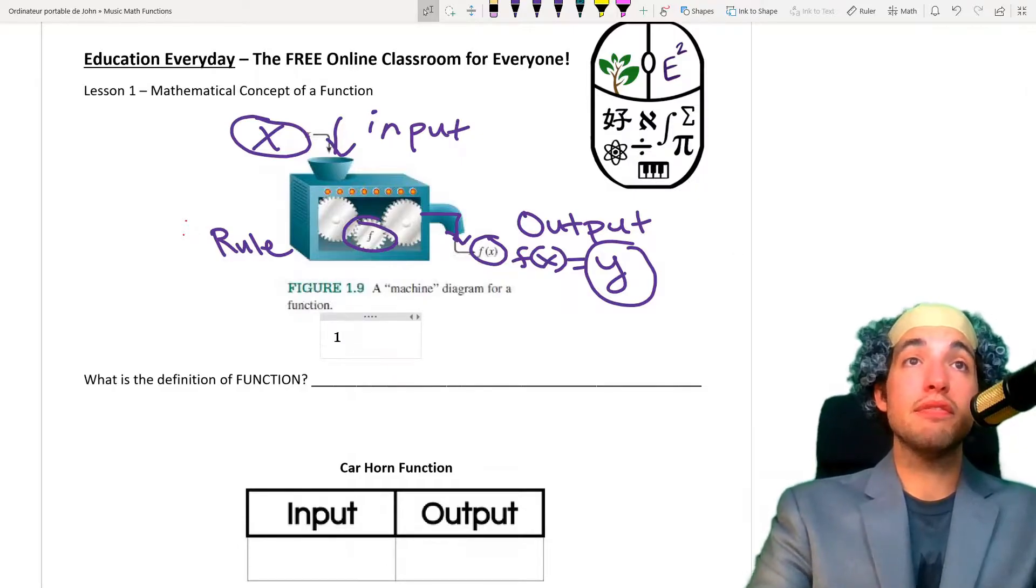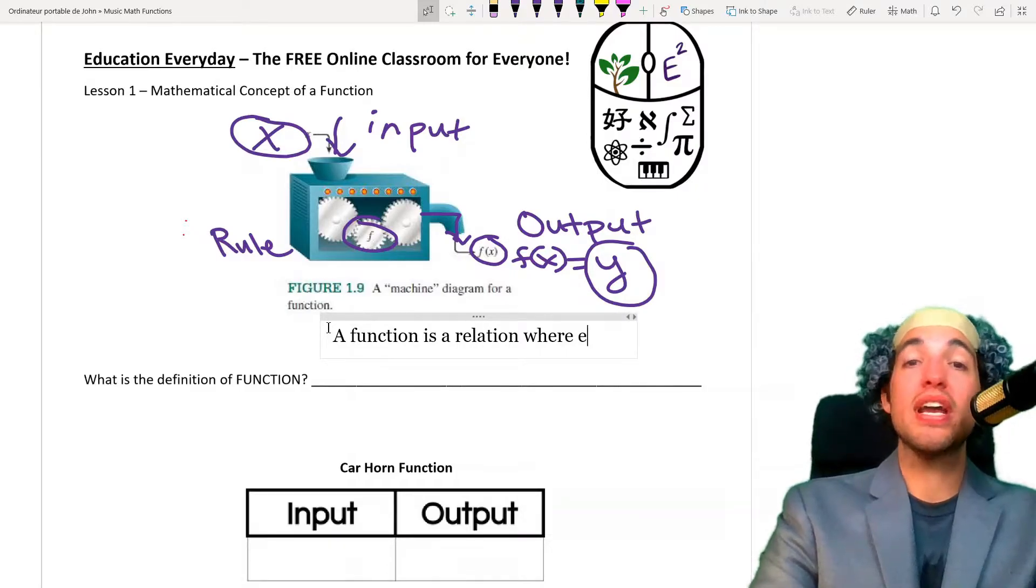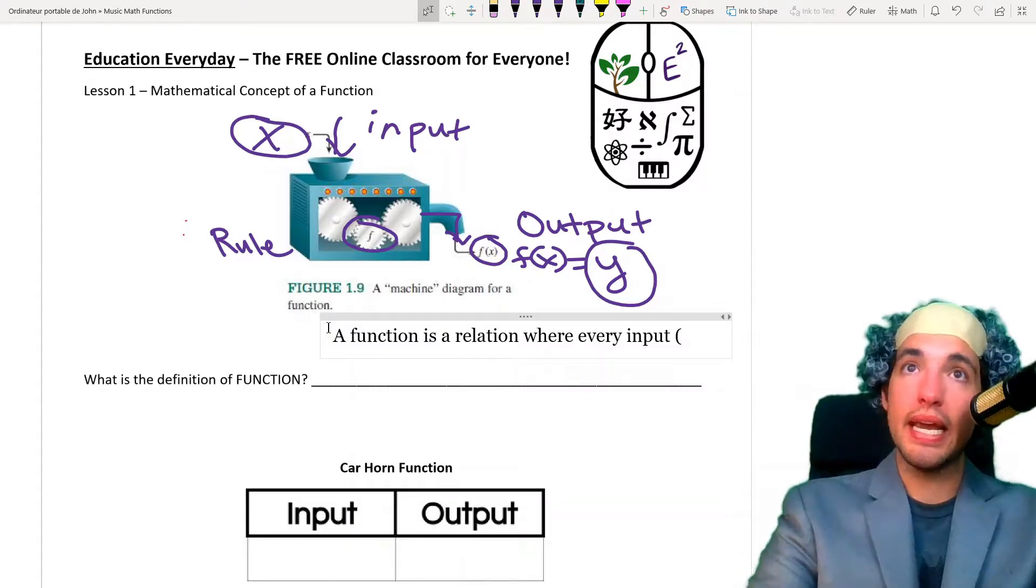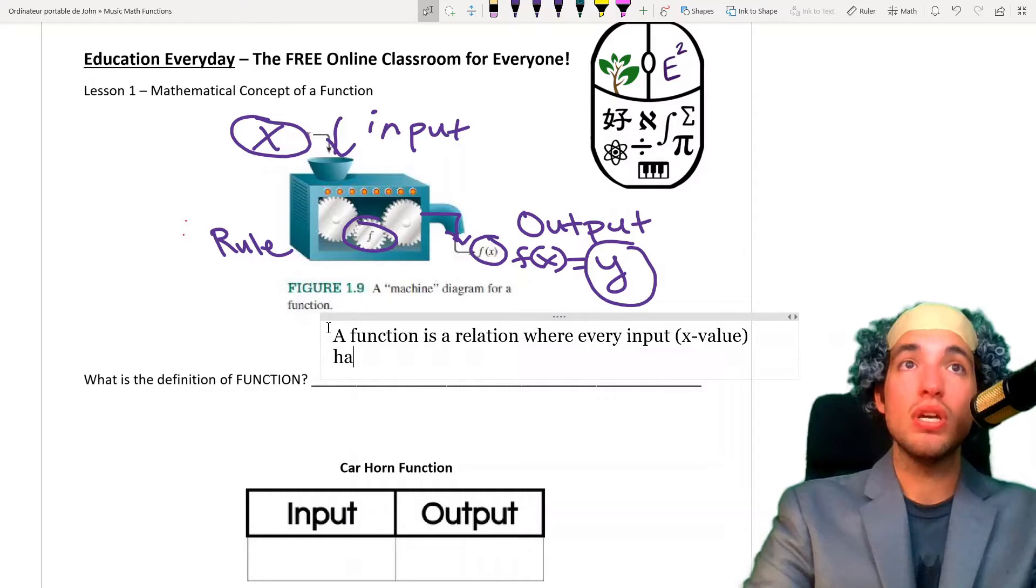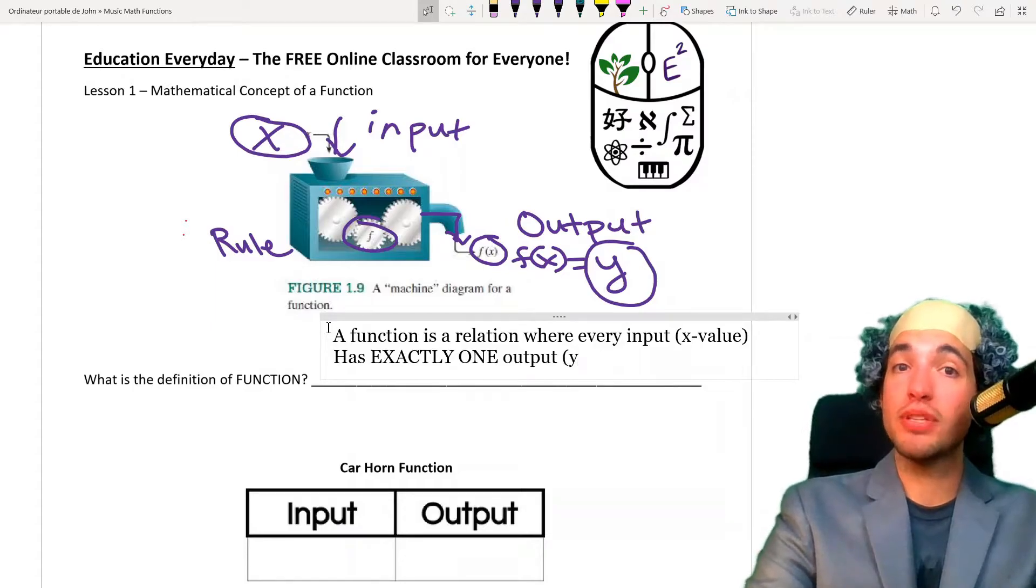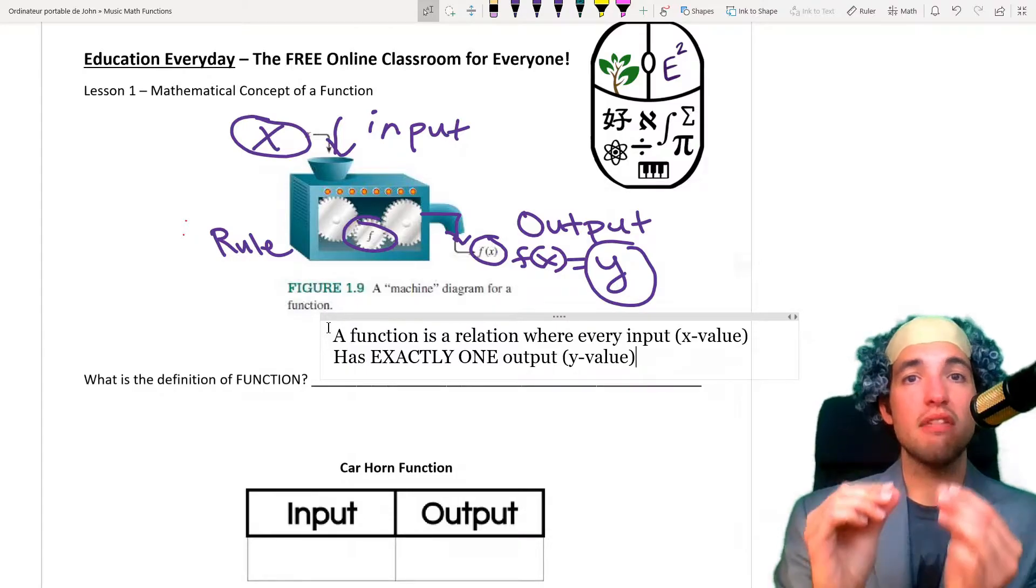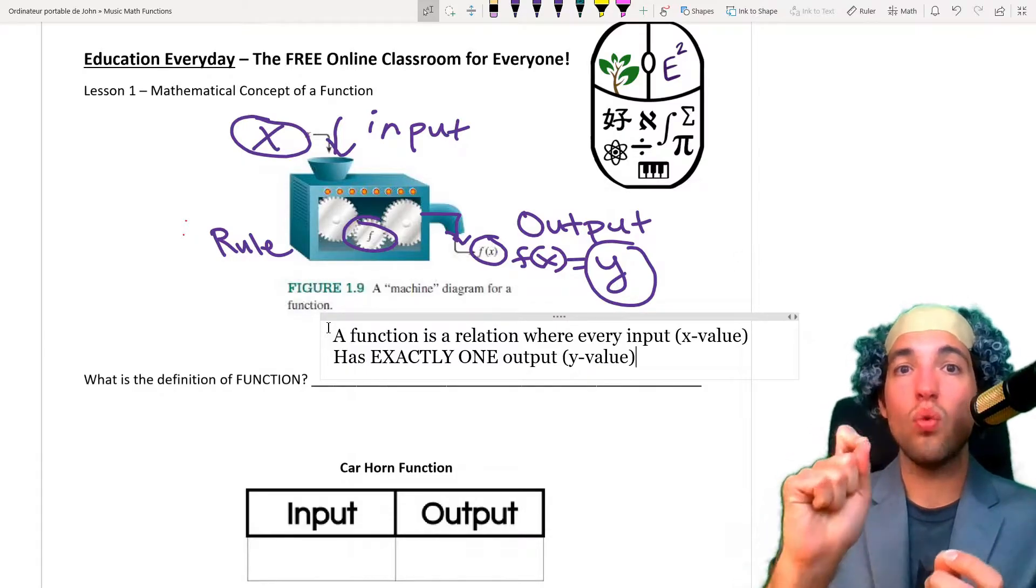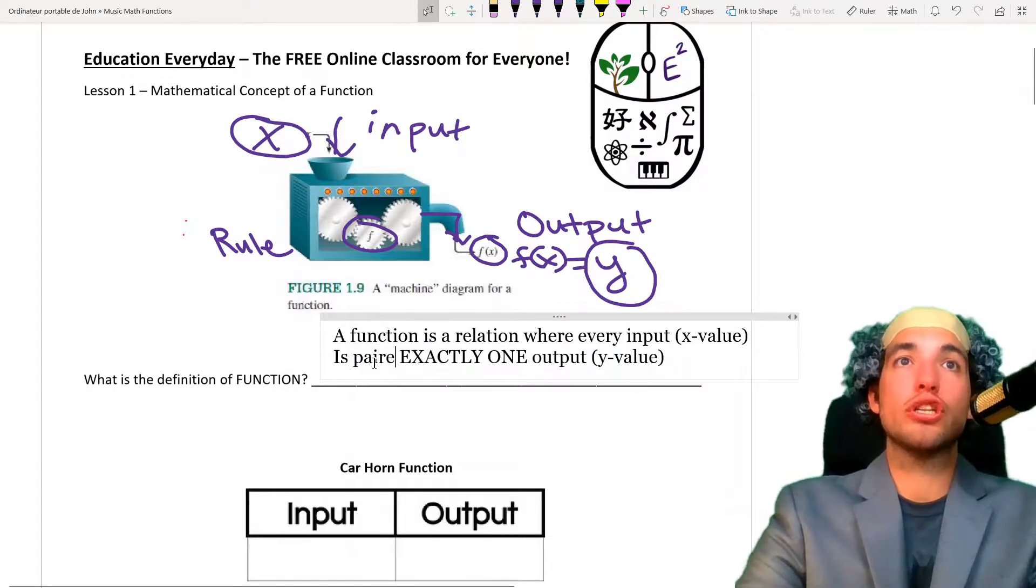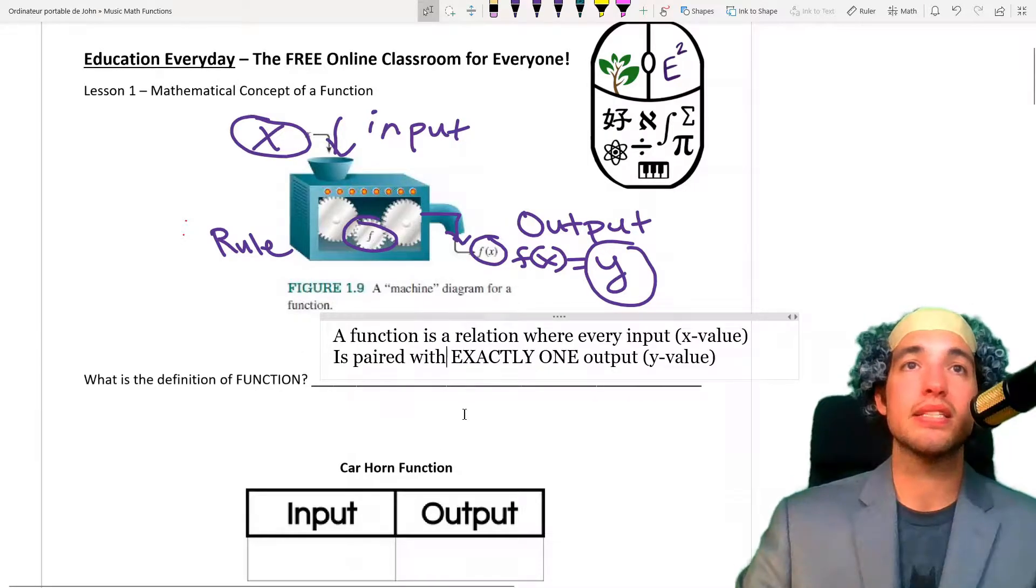So, now what is the definition of function? Well, a function is a relation where every input, wait, which one is input? Is it x or y? It is x. Every input or x value has exactly one output. And remember, output is which one, x or y? It is y. It is the y value. So, every x value needs to be paired with exactly one y value. So, instead of saying has, let us say is paired with. It is paired with exactly one y value. It is saying the same thing.